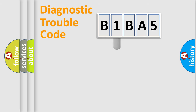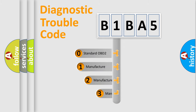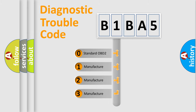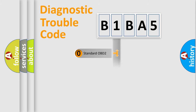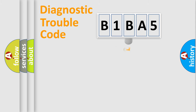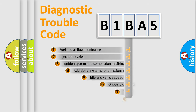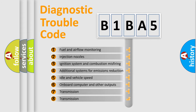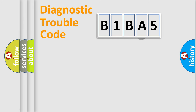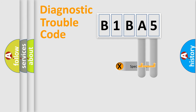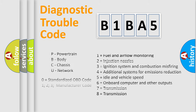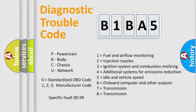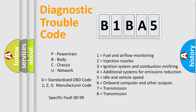This distribution is defined in the first character of the code. If the second character is expressed as zero, it is a standardized error. In the case of numbers 1, 2, or 3, it is a more manufacturer-specific expression of the car error. The third character specifies a subset of errors. This distribution is valid only for the standardized DTC code. Only the last two characters define the specific fault of the group, and this division is valid only when the second character is zero.